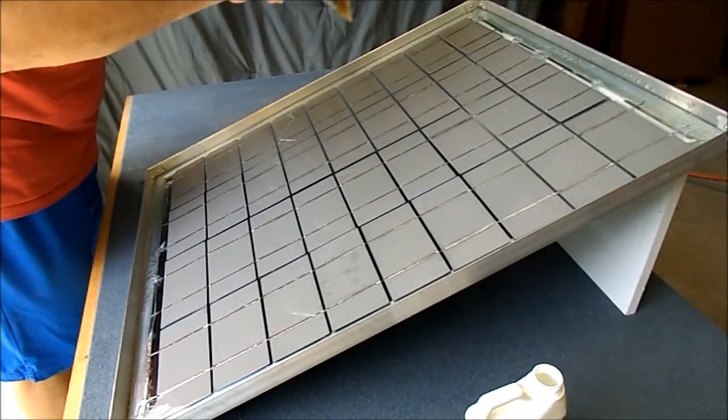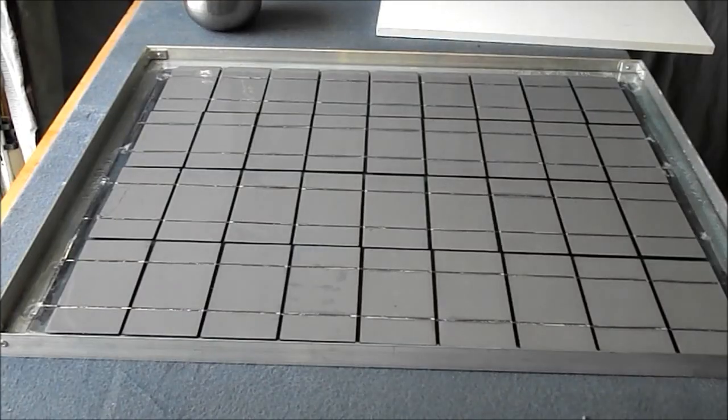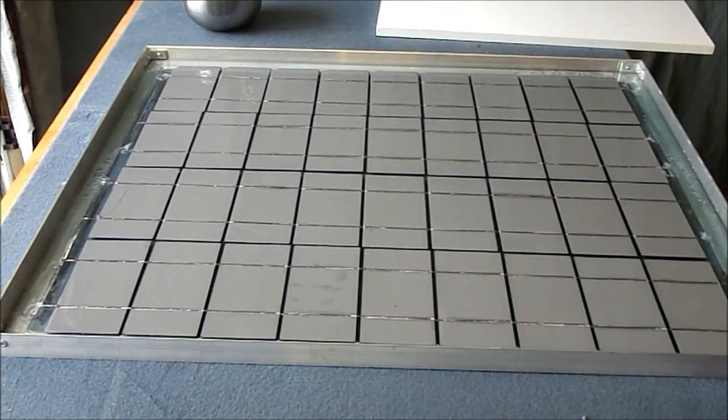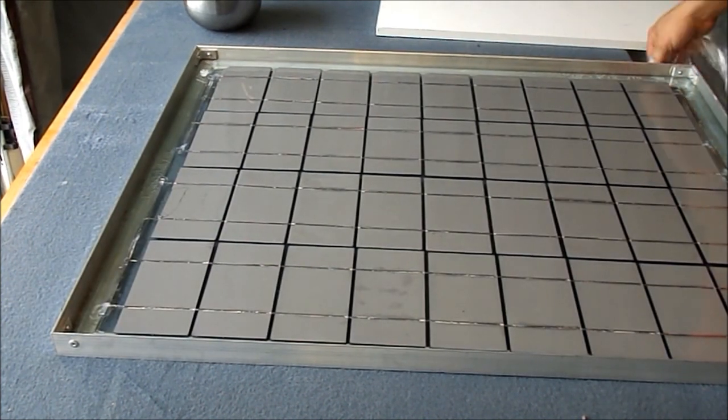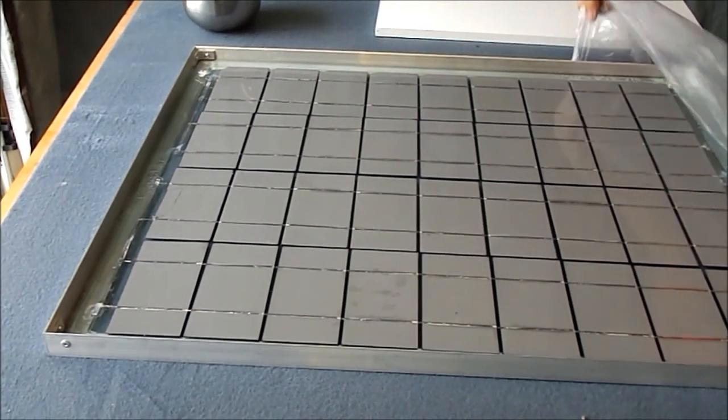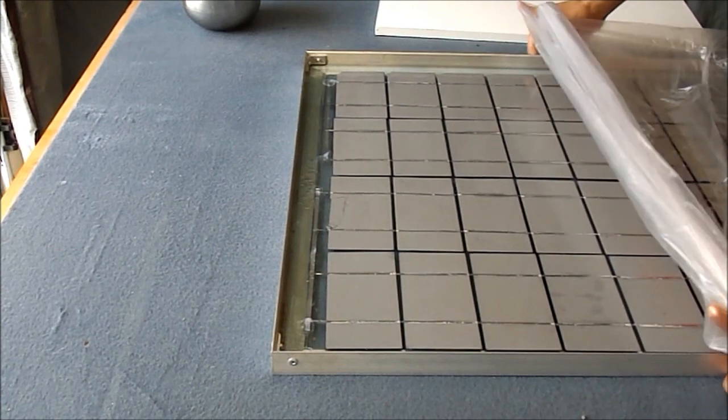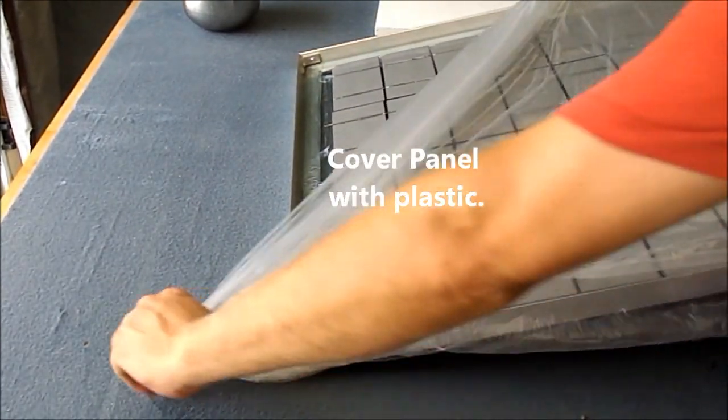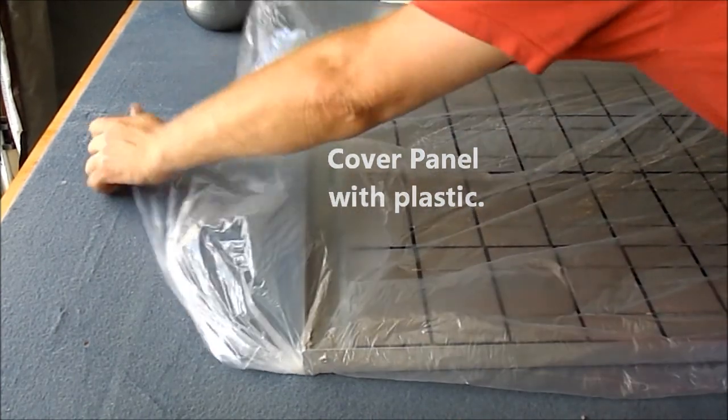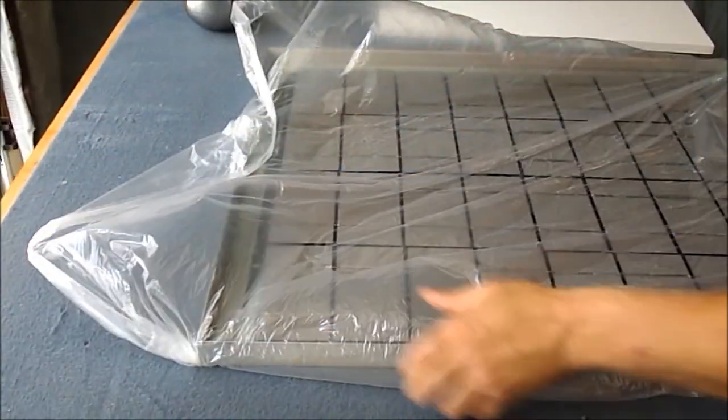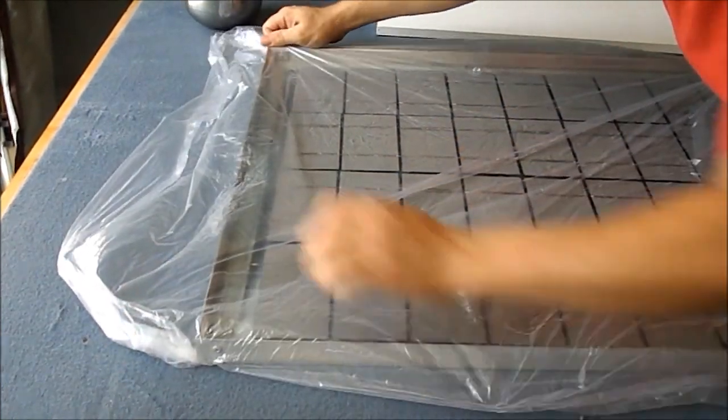Once you are satisfied that the air is removed, you will remove the board and spread out the encapsulant evenly over all the backs of the cells. The final step in production of your panel is to press the cells down to the glass. To facilitate this, we are covering the backs of the cells with a plastic sheet. This will prevent the encapsulant from adhering to the weight that we put on the back of the panel.